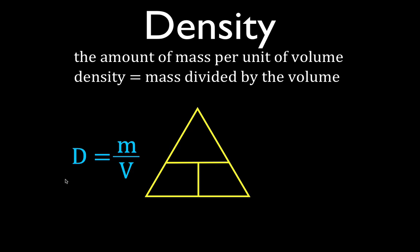The way we do that is by using the magic math triangle. We take the equation with D, M, and V and put them in the triangle. M goes on the top, V goes on the bottom right, and D goes on the bottom left. That's how you place density, mass, and volume into the magic math triangle.